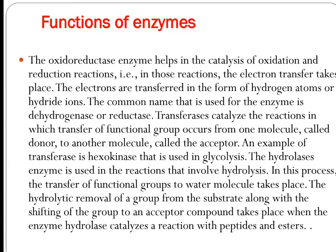Function of Enzyme: In oxidation-reduction reactions, electron transfers take place in the form of a hydrogen atom or hydride ion. Common names of these enzymes are Dehydrogenase and Reductase. Transferases catalyze reactions in which transfer of a functional group takes place from one molecule, called the donor, to another molecule called the acceptor. An example of a transferase is Hexokinase, used in glycolysis. Hydrolases are used in reactions involving hydrolysis, where the transfer of a functional group to a water molecule takes place.